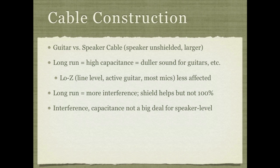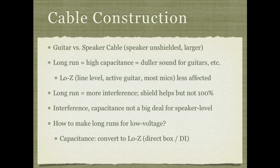If you want to run a long cable for a very low voltage source such as a microphone, a passive guitar, or most line level equipment, you have two strategies. First, for passive guitars and other high impedance sources, you can run it through a direct box or DI box, which converts the signal to low impedance so it can resist the effects of capacitance in long cables. The other option is to use balanced cables.